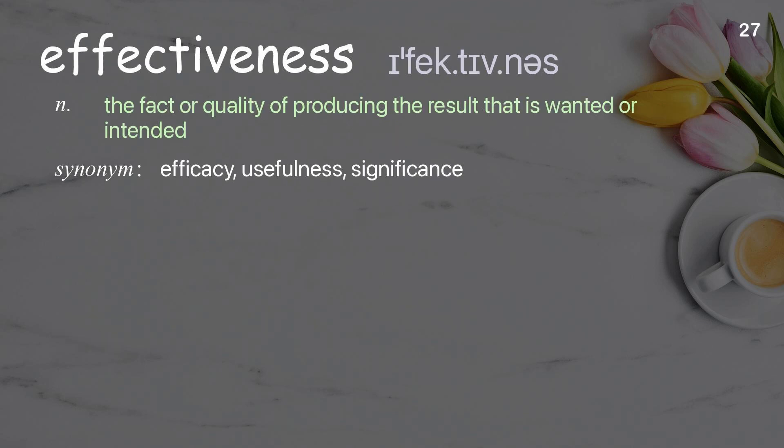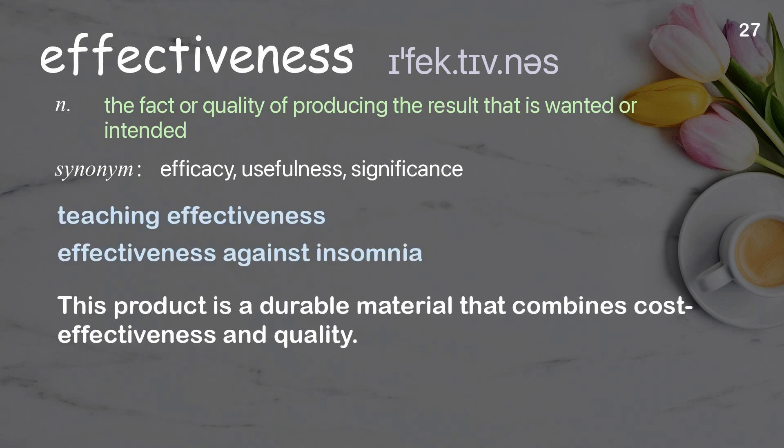Effectiveness. The fact or quality of producing the result that is wanted or intended. Examples: teaching effectiveness, effectiveness against insomnia. This product is a durable material that combines cost-effectiveness and quality.